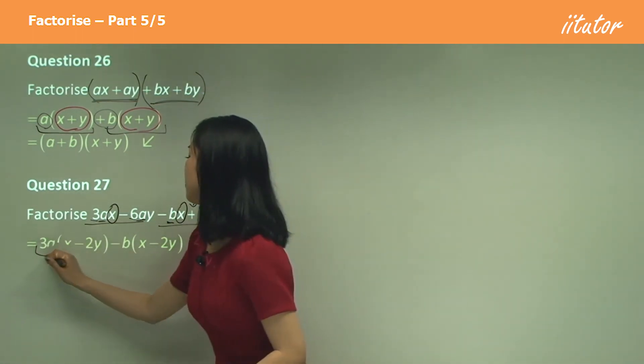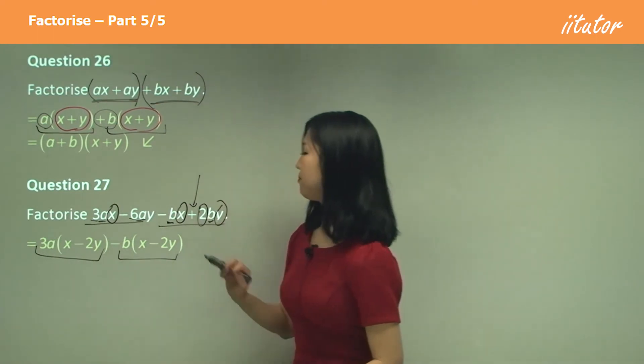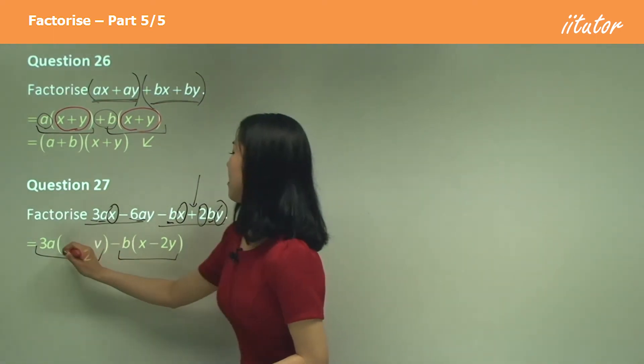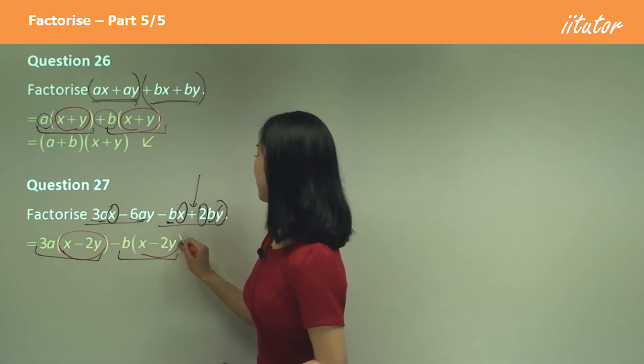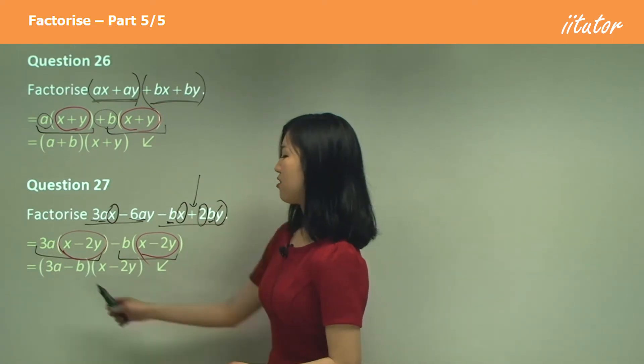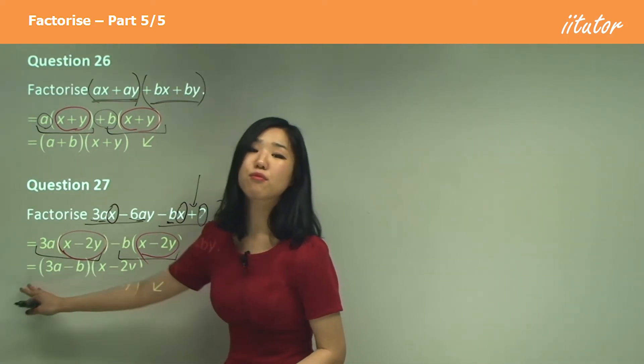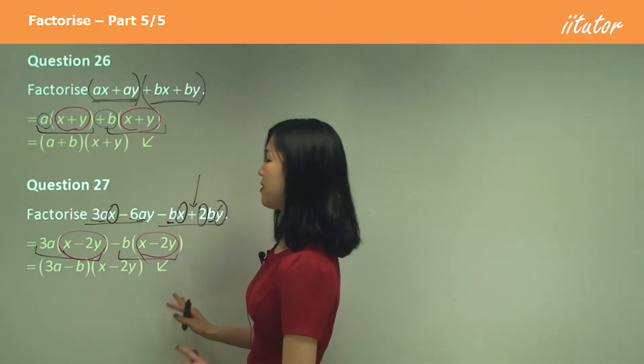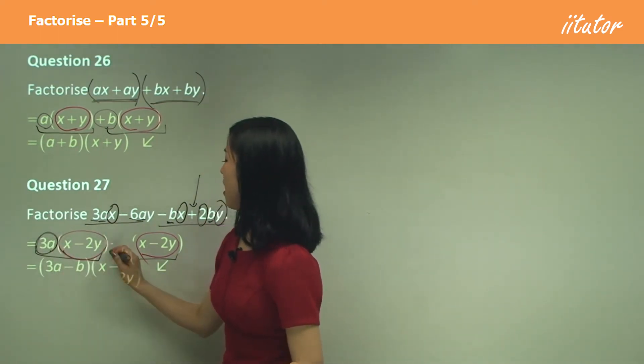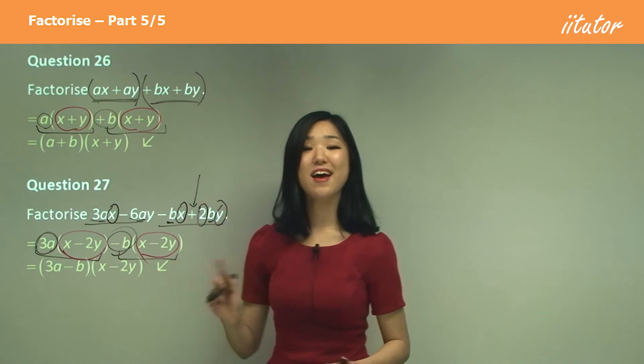So now, we've got this term and this term. What's common between those two terms? x minus two y is common. It's exactly the same. So I'll take that out as a common factor. You can take it out at the back or in the front, whatever you like. It doesn't really matter. So we just have three a left here and minus b left here. So that is the answer.